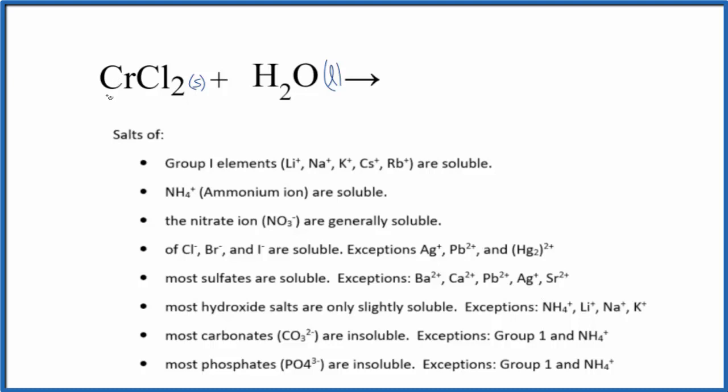So we're looking for either chromium or chlorine, the chloride ion. So we go down, and here it says salts of the chloride ion, bromide, and iodine, they're soluble with a few exceptions. Chromium, that's not one of our exceptions, so this should be soluble in water.